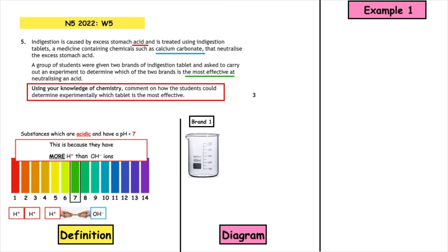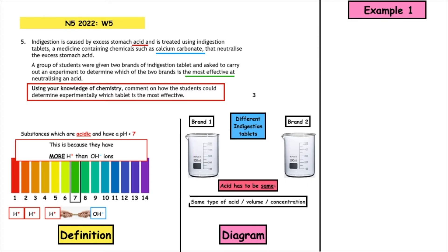You could then draw a diagram so you could have two beakers and you could label the things that are the same and what's different. So we're wanting to investigate the different brands of indigestion tablets so those would be different, but then everything else has to remain the same. So we say that the acid's the same, and that's the same type of acid, volume of acid, and concentration.